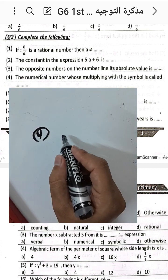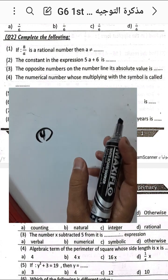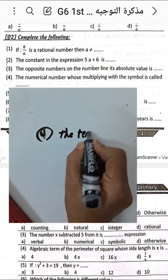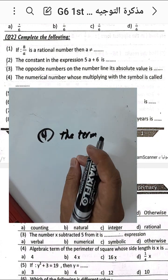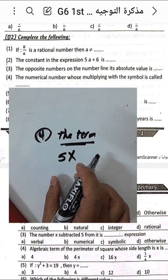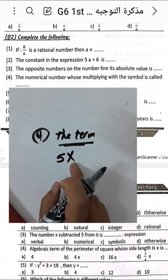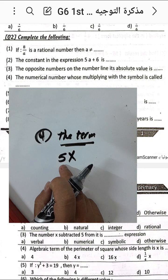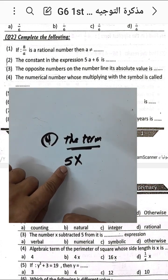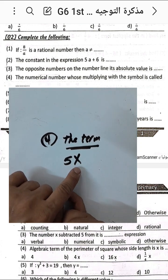Question number four: the numerical number multiplied by a symbol is called a term. For example, five times x is called a term. The term contains at least two factors: five is the numerical factor and x is the algebraic factor. The product between a numerical number and a letter symbol is called a term.